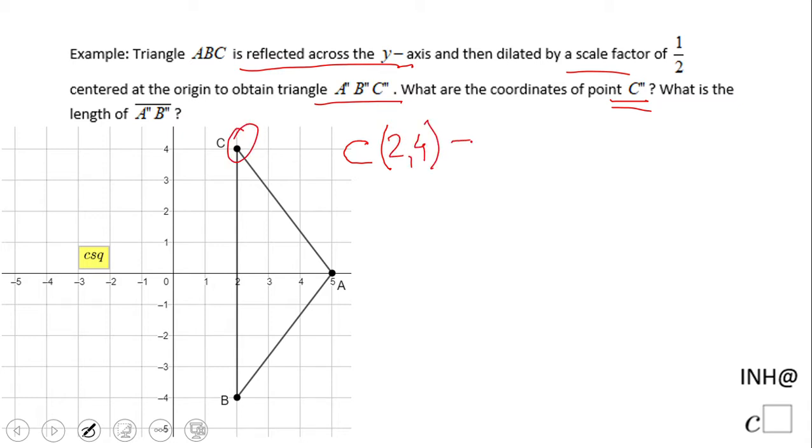Then we're going to reflect it over the y-axis. Here we have a rule that looks like that: (x,y) becomes (-x,y).